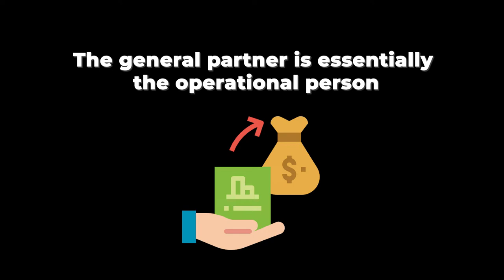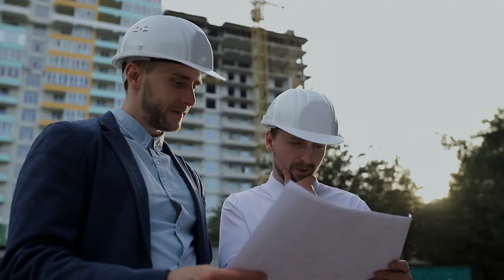The general partner is essentially the operational person. The general partner typically finds the deal — he or she has the contacts with brokers and other people that source deals. They're the ones that line up the debt financing, deal with the mortgage brokers. They are also the ones operationally executing on the business plan — so once they close on the property, if there needs to be any renovation work, they're responsible for that, as well as day-to-day operations and management.